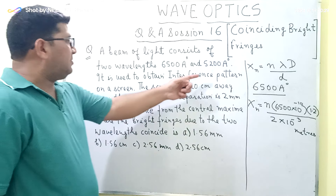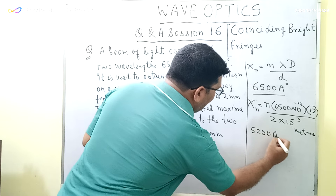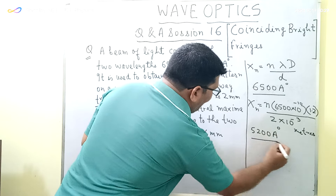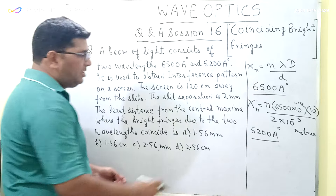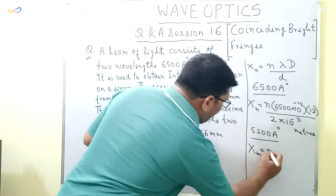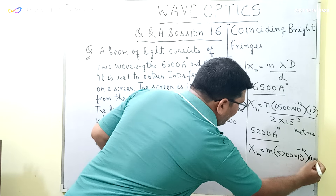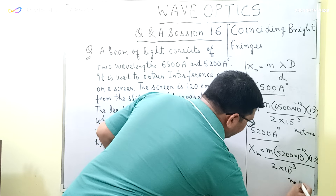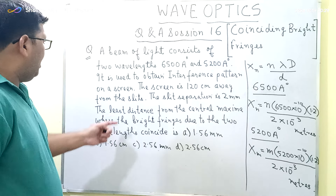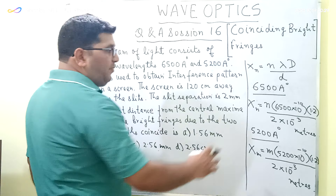Similarly, for the beam of light of wavelength 5200 angstrom, the distance of the mth bright fringe is x_m = m × 5200 × 10⁻¹⁰ × 1.2 / (2 × 10⁻³) meters, which simplifies to 0.5 × 10⁻³ meters times m.